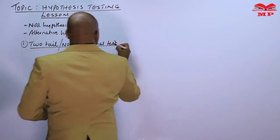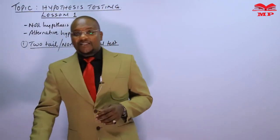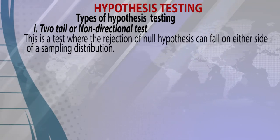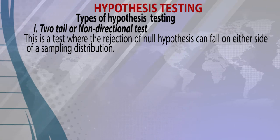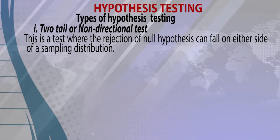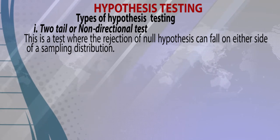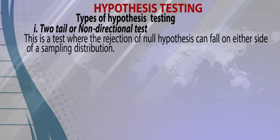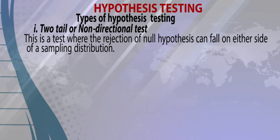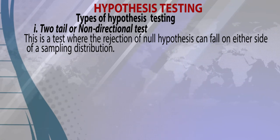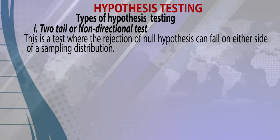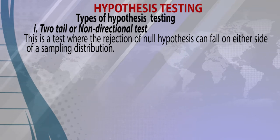The types of hypothesis testing: number one is the two-tail or non-directional test. This is a test where the rejection of the null hypothesis can fall on either side of the sampling distribution. It normally involves the unequal sign in the alternative hypothesis.